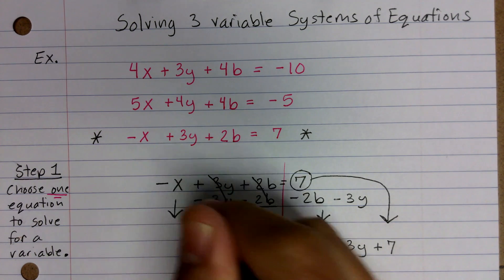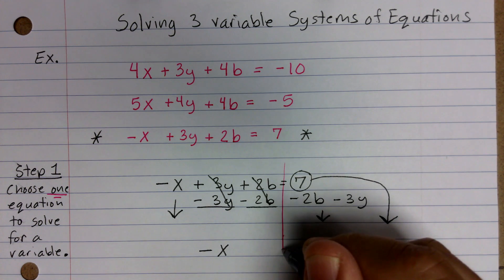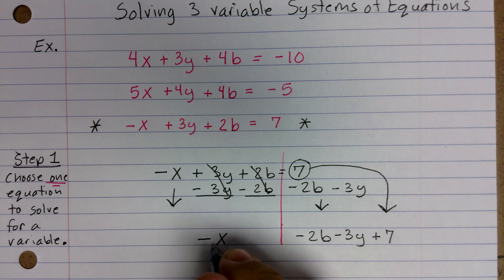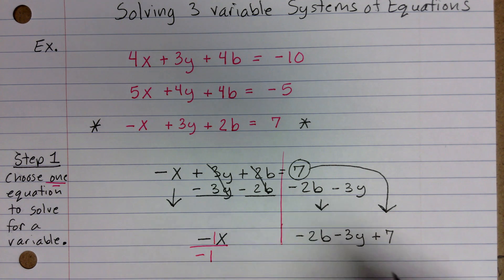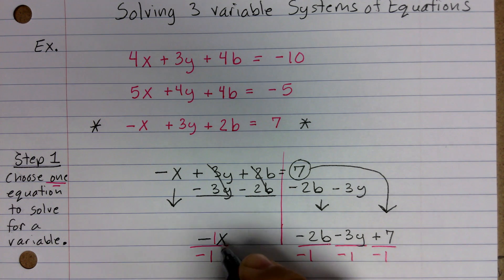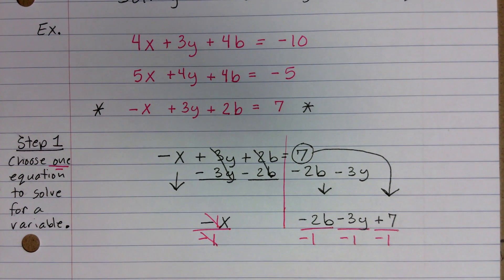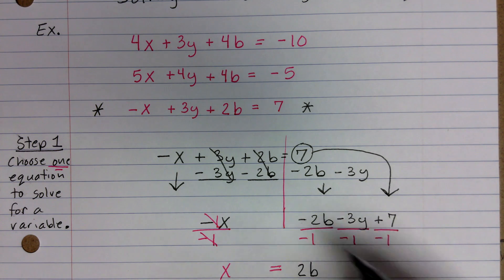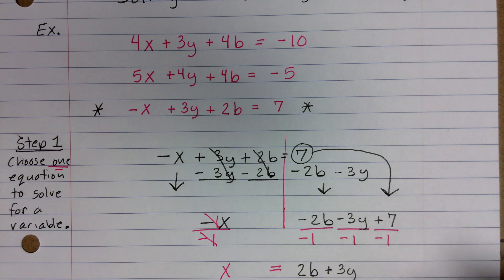So I bring the 7 over and put it right at the end: plus 7. Now we still have negative X on the left side. I want to get rid of the negative sign, because we want positive X equals something. So I'll divide out the coefficient of negative 1 — remember there's always an invisible 1 in front of every variable. Dividing by negative 1 changes it to positive X, but I also have to divide every term on the right side by negative 1. Negative 1 over negative 1 leaves X. Dividing by negative 1 just changes the sign of each value: negative 2B becomes positive 2B, negative 3Y becomes positive 3Y, and positive 7 becomes negative 7.